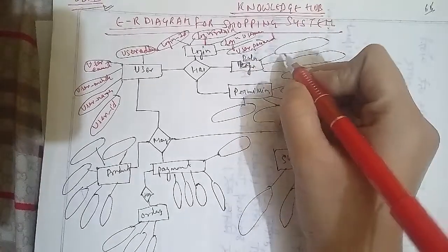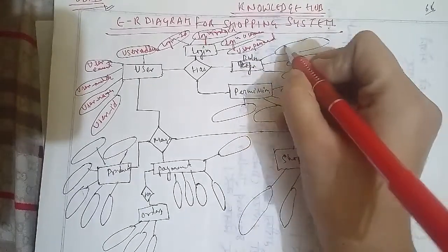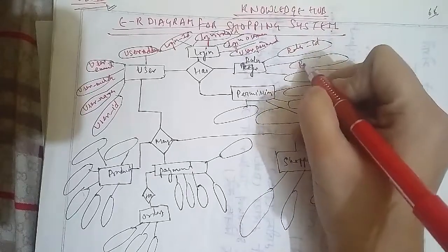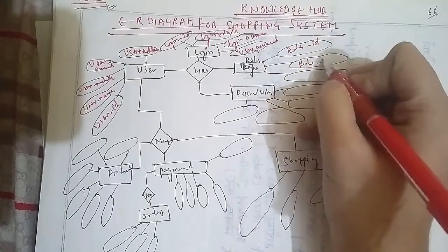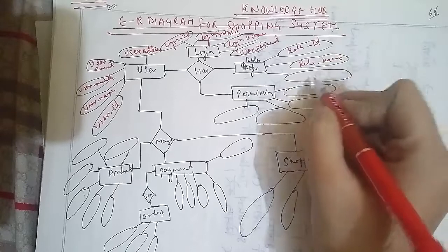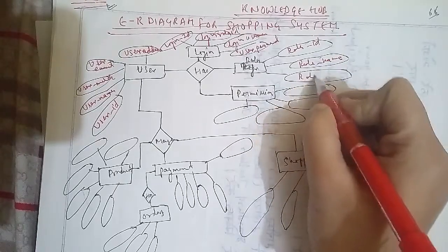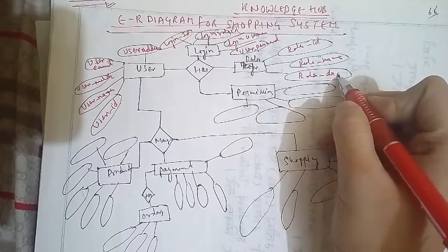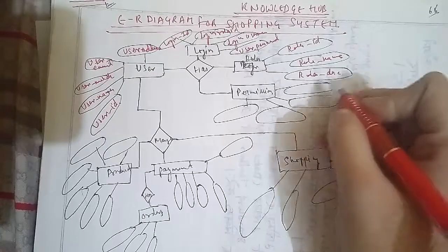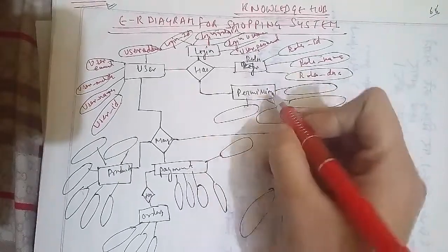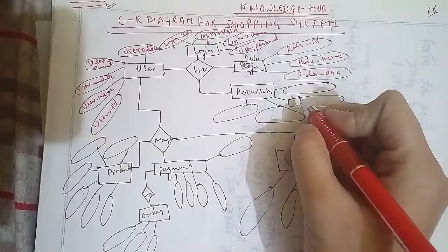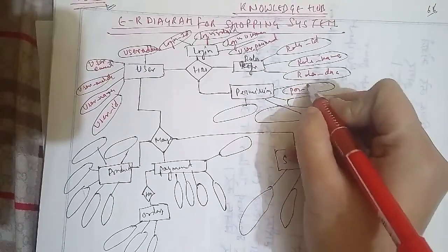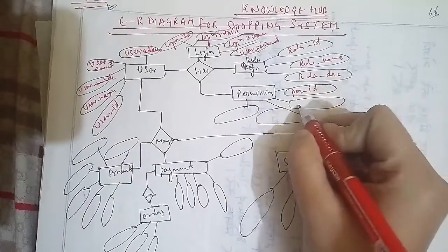In terms of Role, this has been connected by Role ID and Role Name. This is also connected to Permission. Permission has attributes: Permission ID, Permission Role ID, Permission Module, and Permission Name.